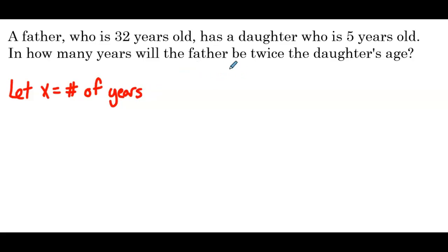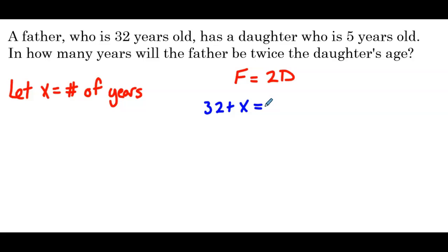We're looking for when the father will be twice the daughter's age. The father is 32 now, so in x years he'll be 32 plus x. The daughter is 5, so in x years she'll be 5 plus x, and we're doubling that age. So our equation is 32 plus x equals 2 times 5 plus x.